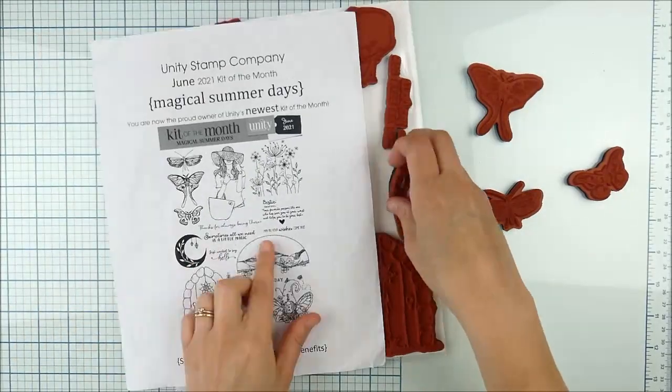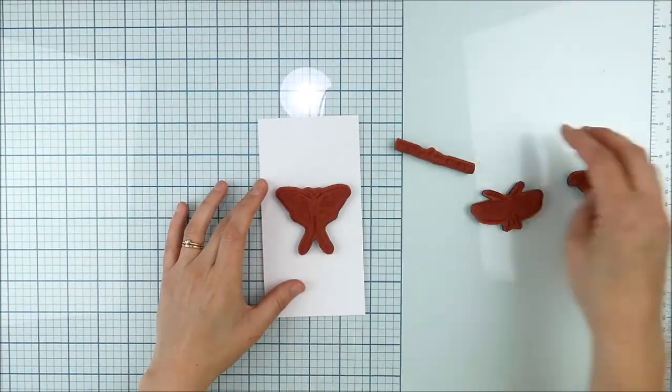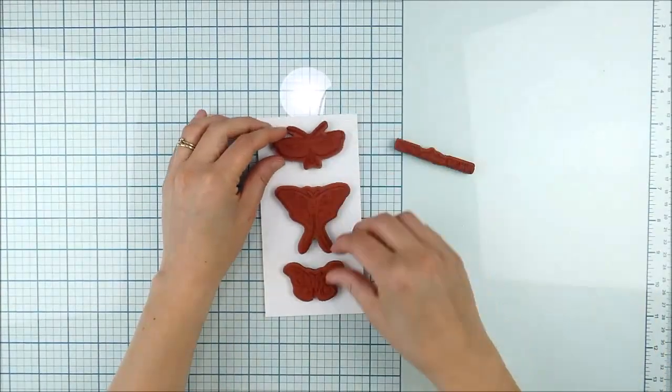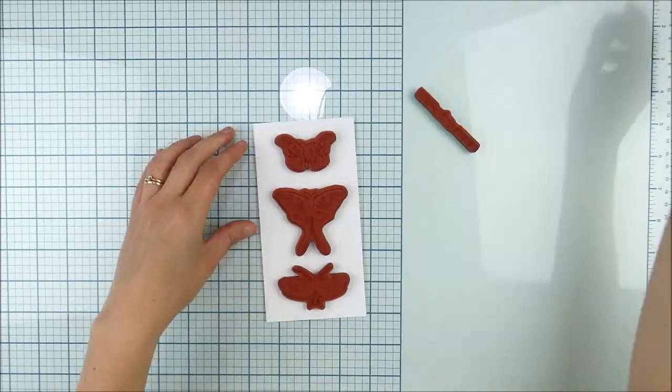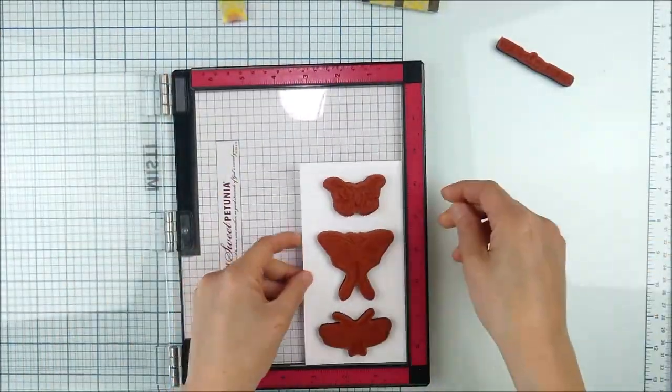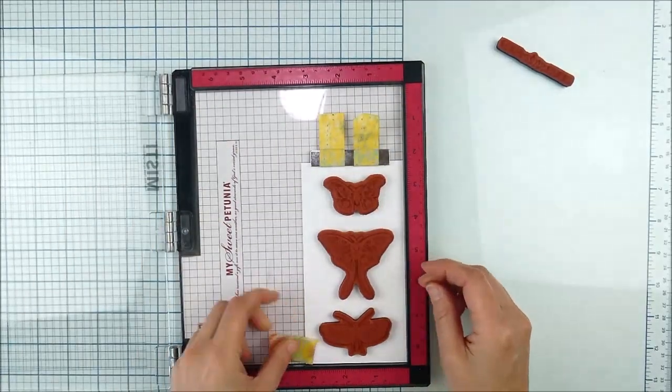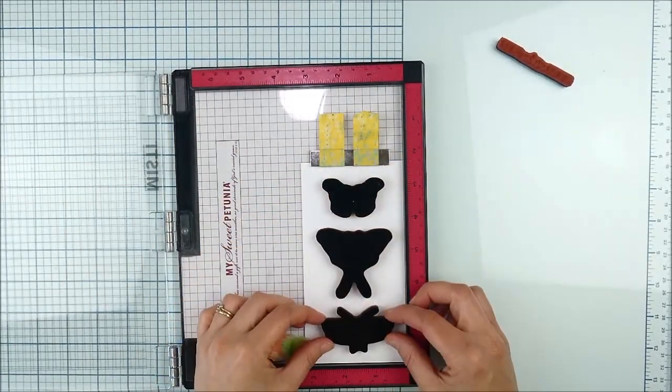I'm using the July 2021 kit of the month from Unity Stamp Company. I picked a fun sentiment and these three images - butterfly, moth, I'm not 100% sure, but something with wings that's really cute and pretty. I thought these three were really fun and pretty together.